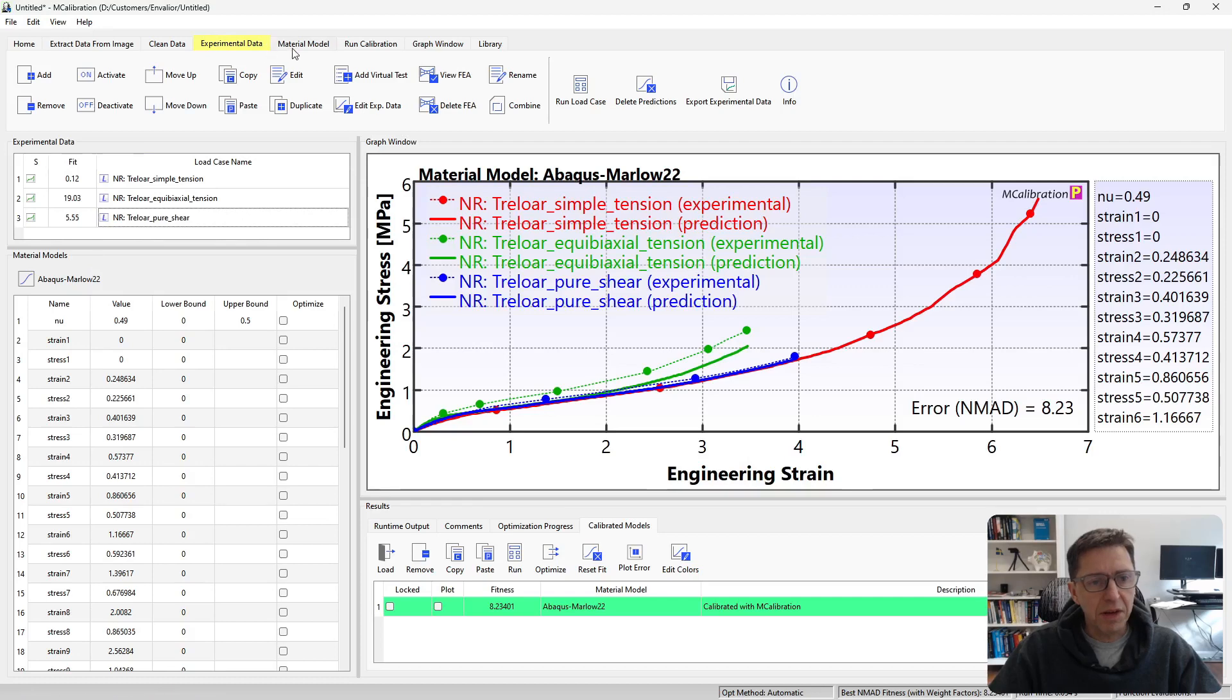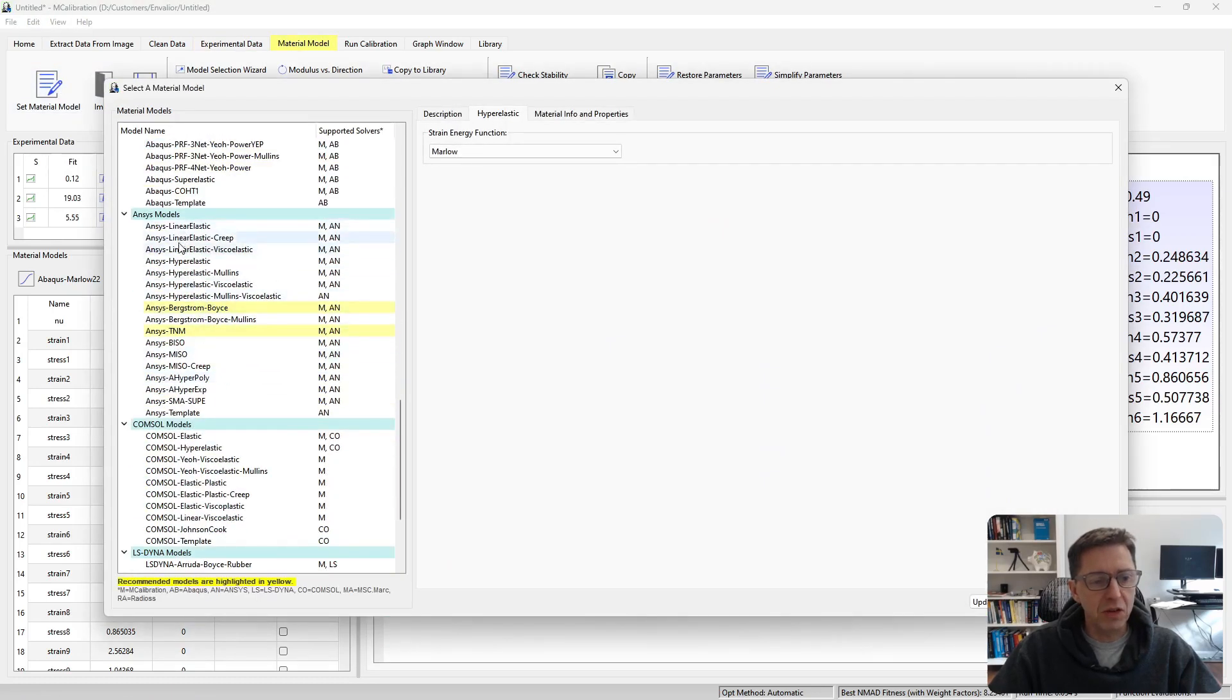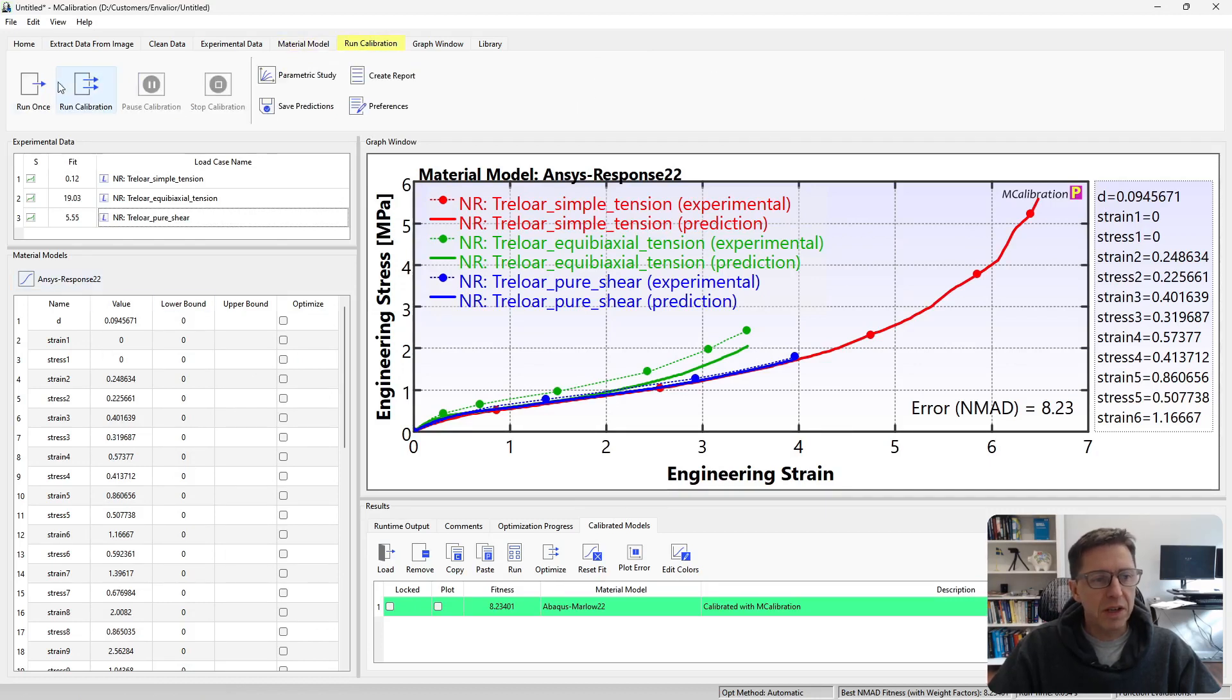Let's take a look at some other option here. Let's go to set material model. We switch over to ANSYS hyperelastic and we switch over to response function hyperelasticity. Say OK. So now it's the ANSYS response function. The software MCalibration here finds these values for you. And here it is.